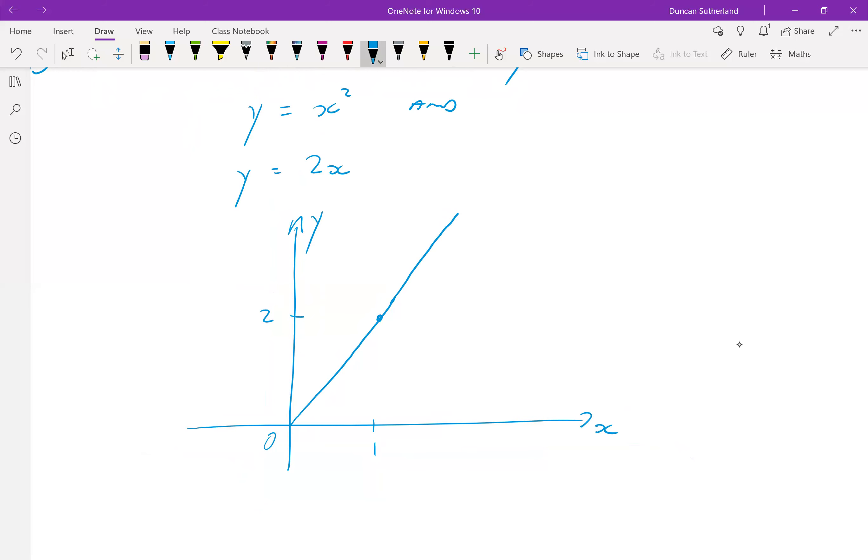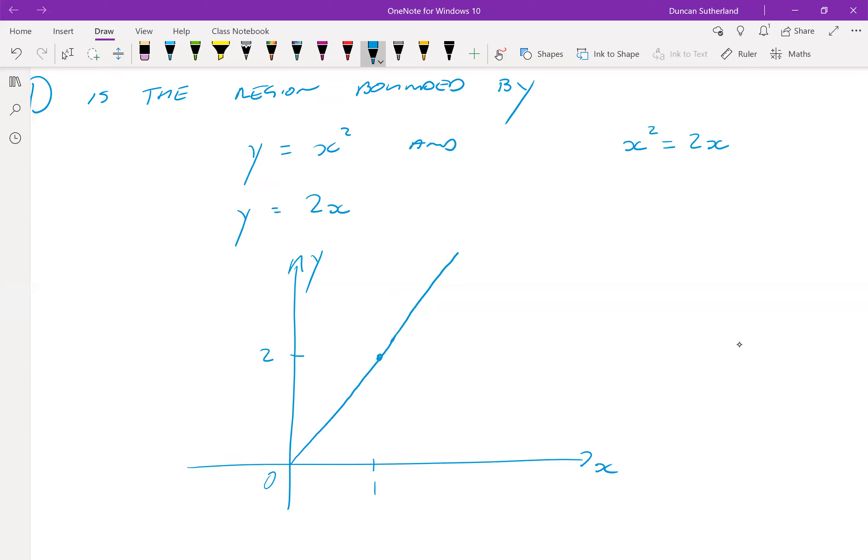So they obviously intersect at the point x squared equals 2x, right? Now, we can solve this either as a quadratic or we can just factorize it. It's really obvious x is 0 or 2, right? So you can divide out, you can say for non-zero, right? And obviously 0 satisfies the equation.